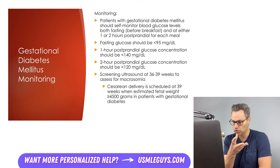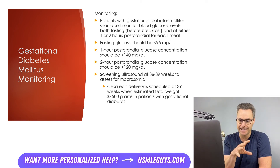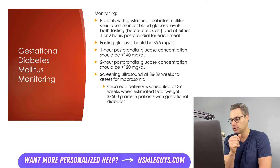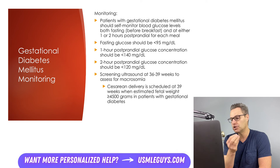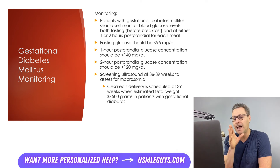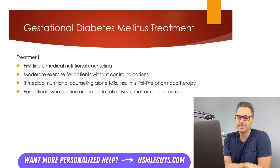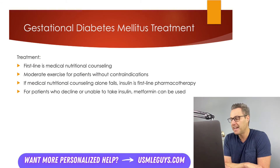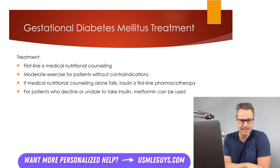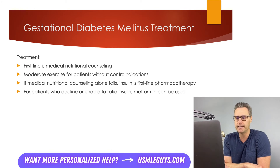If the patient has good control of their gestational diabetes — either with dietary or dietary and pharmacologic treatment — and there's no evidence of macrosomia on ultrasound, then patients can be offered induction as early as 39 weeks of gestation, with induction recommended at the latest at 41 weeks gestation.